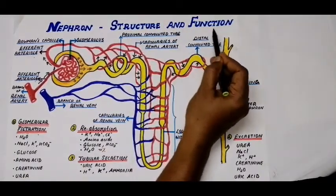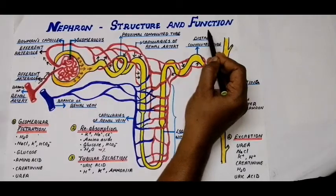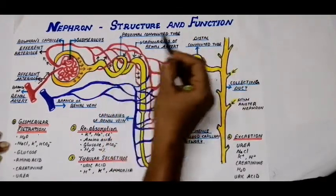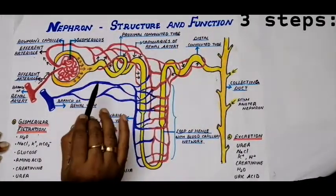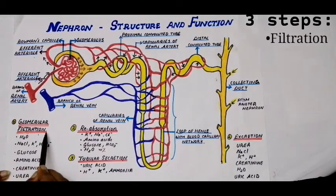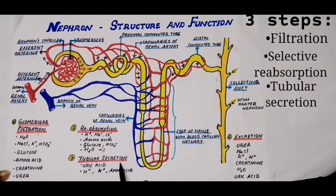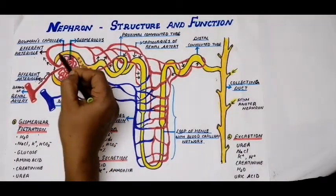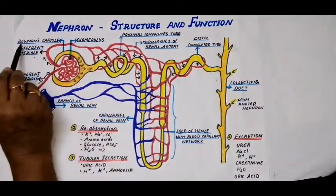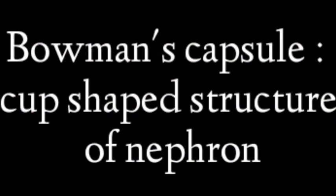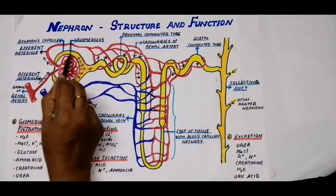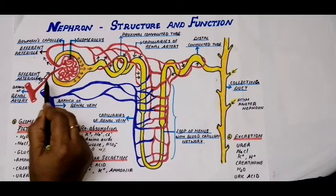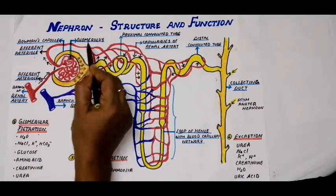Now we study how the nephron functions — how urine is formed. The function of the nephron or urine formation involves three steps: filtration, selective reabsorption, and tubular secretion. The nephron has a cup-shaped upper end called the Bowman's capsule. There is a cavity inside this cup-shaped Bowman's capsule, and this cavity contains a bundle of blood capillaries called the glomerulus.